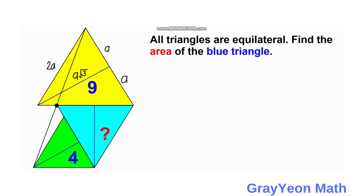For this green triangle, we label this length as B, and this half of the length of the green is B, and this is B square root of 3. For the blue triangle, we label this as X, this is X, this is X square root of 3, and the side is actually 2X.